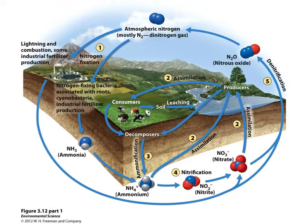So the nitrogen has to be converted into a usable form for plants. The process of converting nitrogen gas into ammonia, or nitrate, is known as nitrogen fixation.